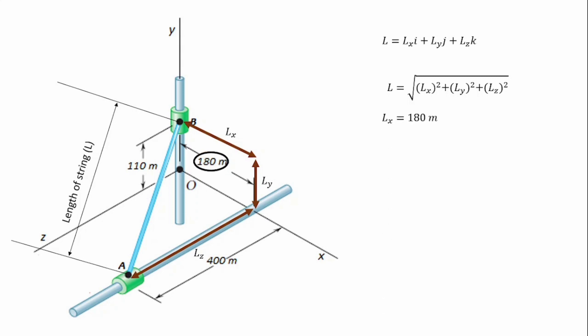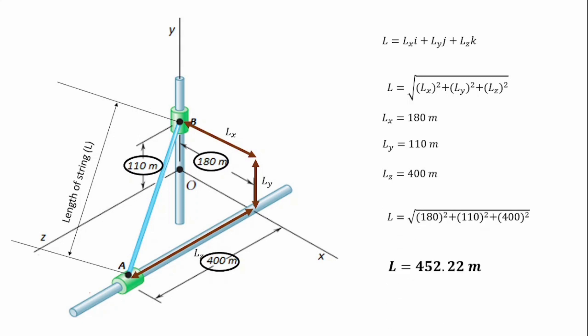LX is equal to 180, as can be seen from the given dimension in the space diagram. LY is equal to 110 meters and LZ is 400 meters, as can also be seen from the space diagram. One can easily calculate the length of the string from here, and if that is evaluated, one will get L to be 452.22 meters as the length of the string.